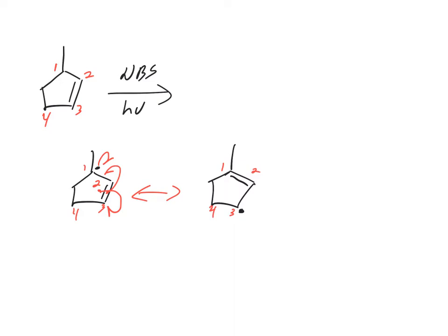We could have the bromine add on carbon three with the pi bond here, or we have the bromine add on carbon one with the pi bond here. So let's draw those first two products.